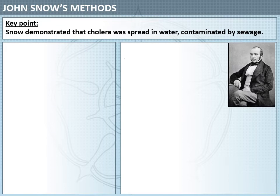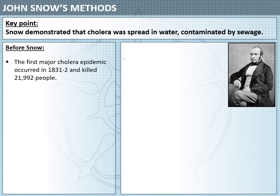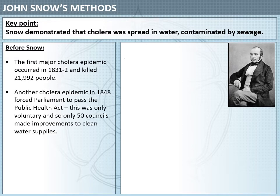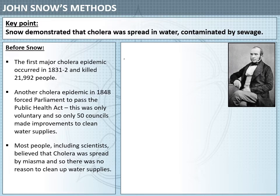This is where John Snow's work becomes important. His key contribution was demonstrating that cholera was spread in water contaminated by sewage. Before Snow, the first major cholera epidemic, which occurred in 1831–32, killed over 21,000 people. Another cholera epidemic in 1848 forced Parliament to pass the first Public Health Act, but as this was only voluntary, very few councils improved their water supplies. Most people, including leading scientists, believed that cholera was spread by miasma in the air, so there was no motivation to clean up water supplies.